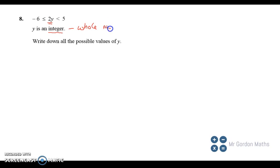So we're looking for whole numbers between minus 6 and 5. But we need to write down all possibilities of y, not 2y which we've got in the middle here, but all values of y.